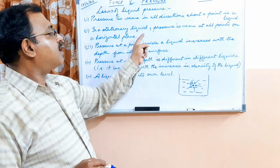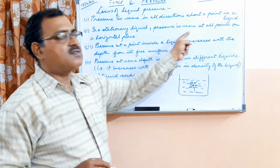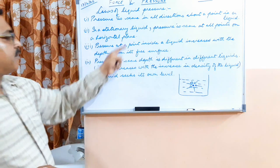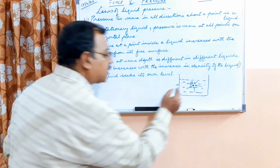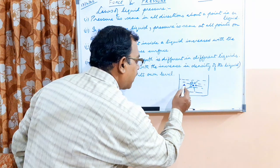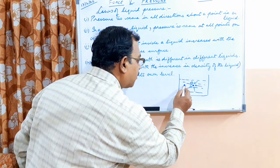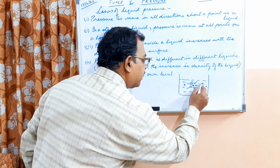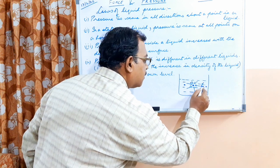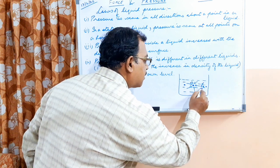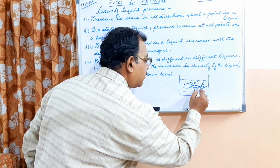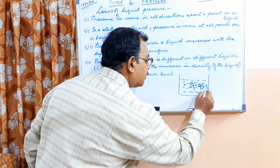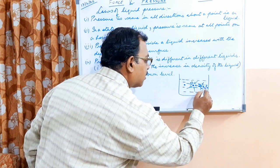Second, in a stationary liquid, pressure is the same at all points on a horizontal plane. If you think of another point on the same horizontal surface, the pressure at that point will also be the same from all sides.